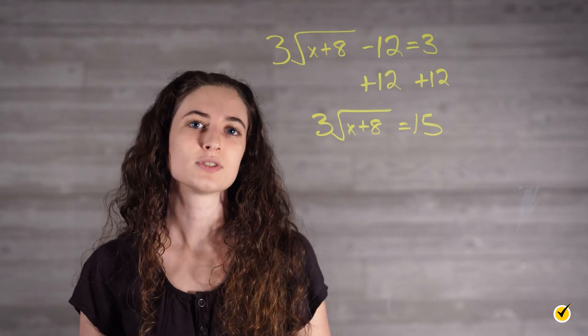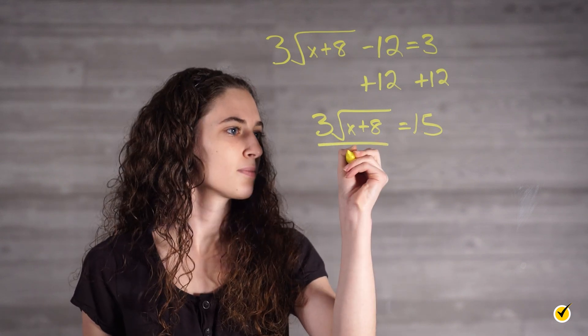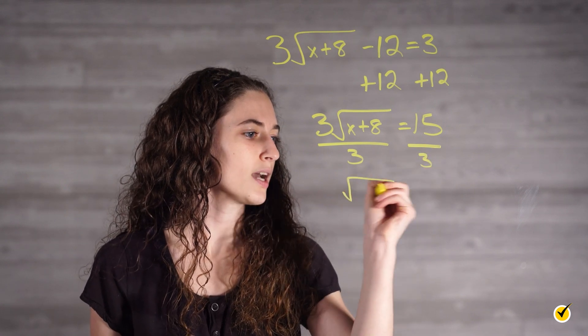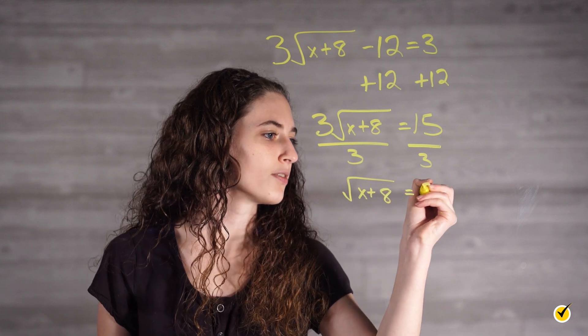Then we divide both sides by 3. Root of x plus 8 is equal to 5.